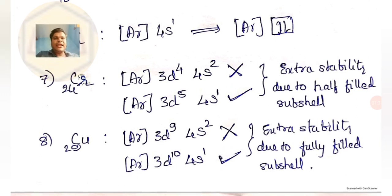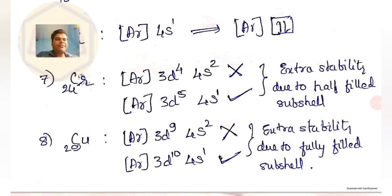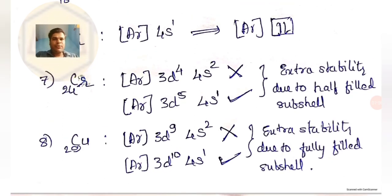This is how we write the electronic configuration of elements. I hope this video has helped you understand the basic principles involved — Aufbau, Hund's rule, and Pauli's exclusion principle — with some examples. Questions related to this topic are limited in number but it is a very basic and important concept. Some questions associated with this will be taken up in the next video. Thank you for watching.